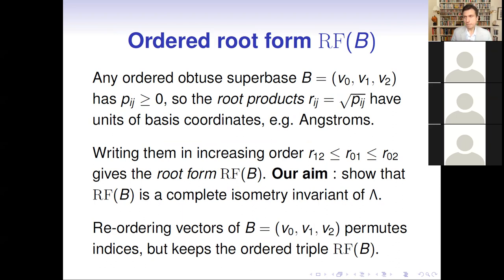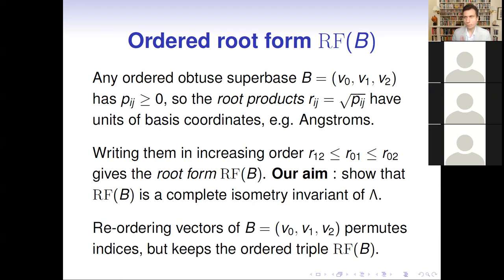After taking the square roots of the co-norms, we write them in increasing order from smallest to largest, and call the resulting ordered triple the root form. At this stage it still depends on the ordered basis. However, if we reorder the vectors of a basis, we reorder the co-norms, but since root products are already sorted in increasing order, the root form does not change under this reordering. So we remove dependence on the ordering of vectors in this step.